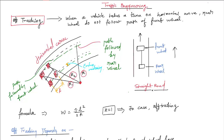In the horizontal curve, when a vehicle takes a turn, the rear wheel does not follow the path of the front wheel. You can see that the black line indicates the path followed by the front wheel and the green line indicates the path followed by the rear wheel. Due to this difference, off-tracking is generated, and due to off-tracking, extra widening is generated in the road.